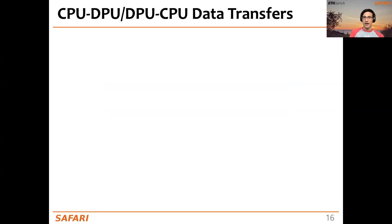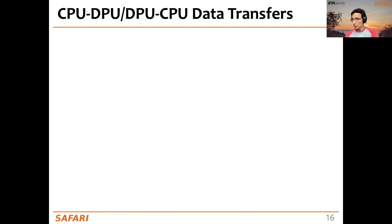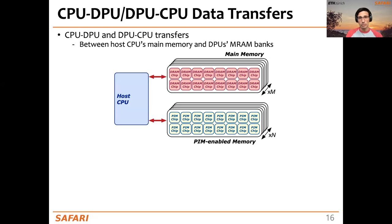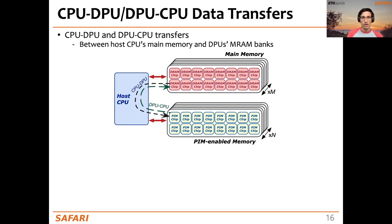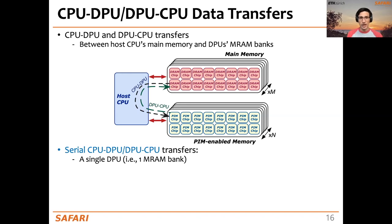After allocating the DPU set and loading the program into the IRAM, we have to move input data from main memory to the PIM-enabled memory, and after execution, move results from MRAM back to host main memory. This is done using CPU-DPU and DPU-CPU transfers. A CPU-DPU transfer is a data copy between main memory and PIM-enabled memory. A DPU-CPU transfer copies results from PIM-enabled memory to main memory. There are different types: serial transfers targeting a single DPU, parallel transfers targeting multiple DPUs, and broadcast CPU-DPU transfers.